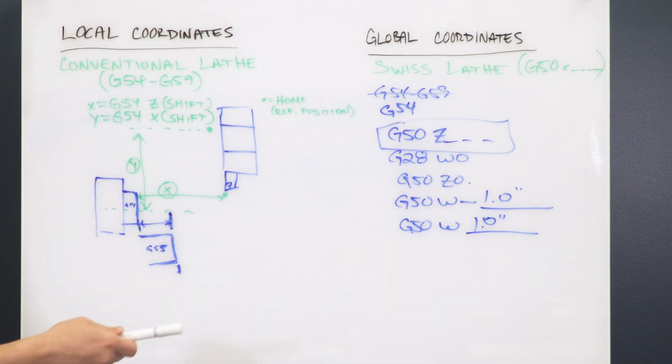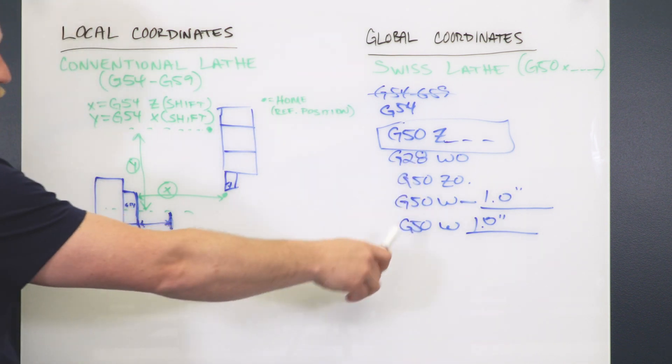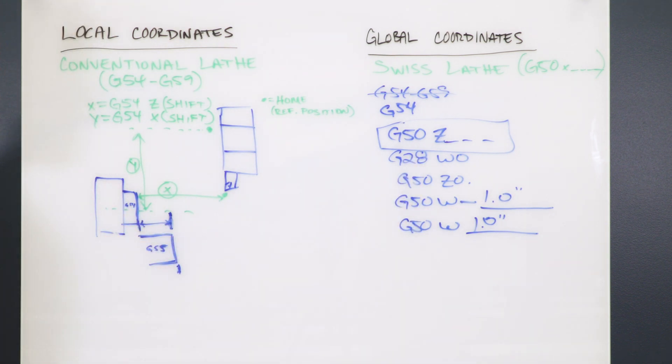And then at the end of the program, starting your next one, you go back into G54. It'd be the same thing here. At the end of my program, I'm going to shift everything back to where I started.